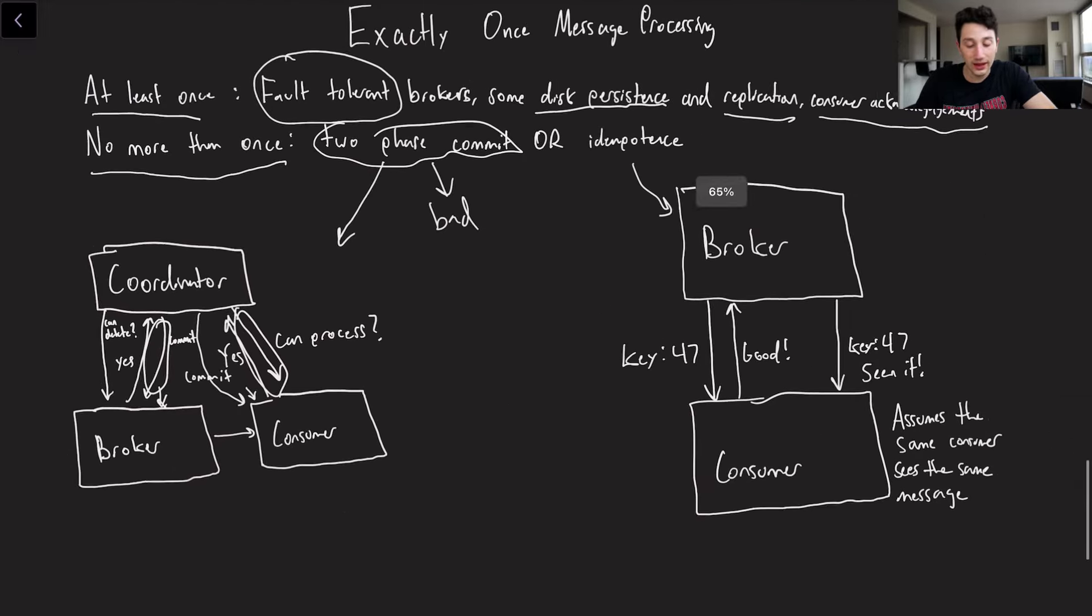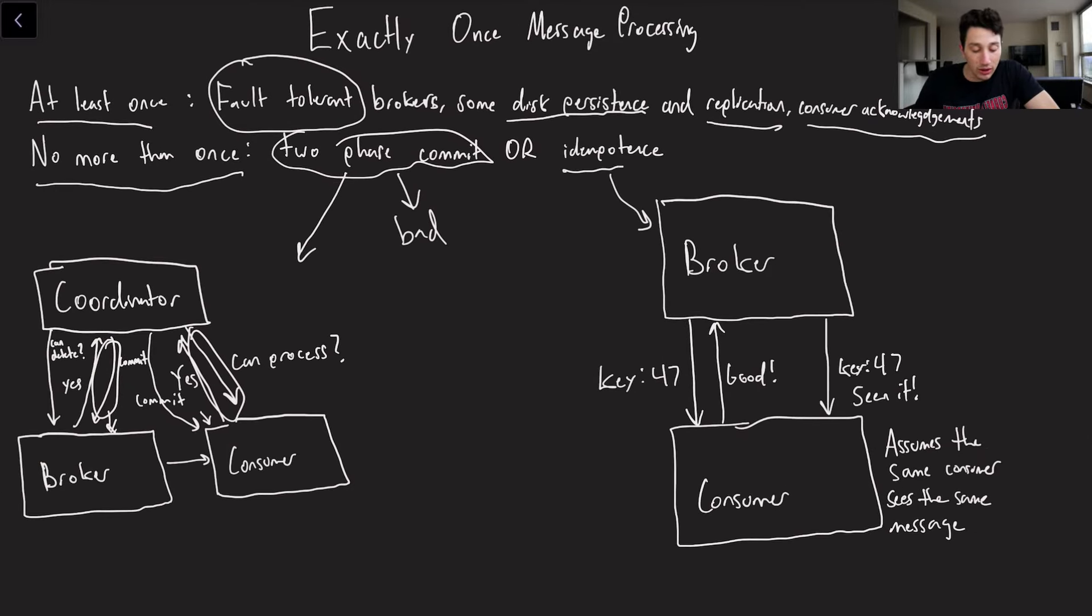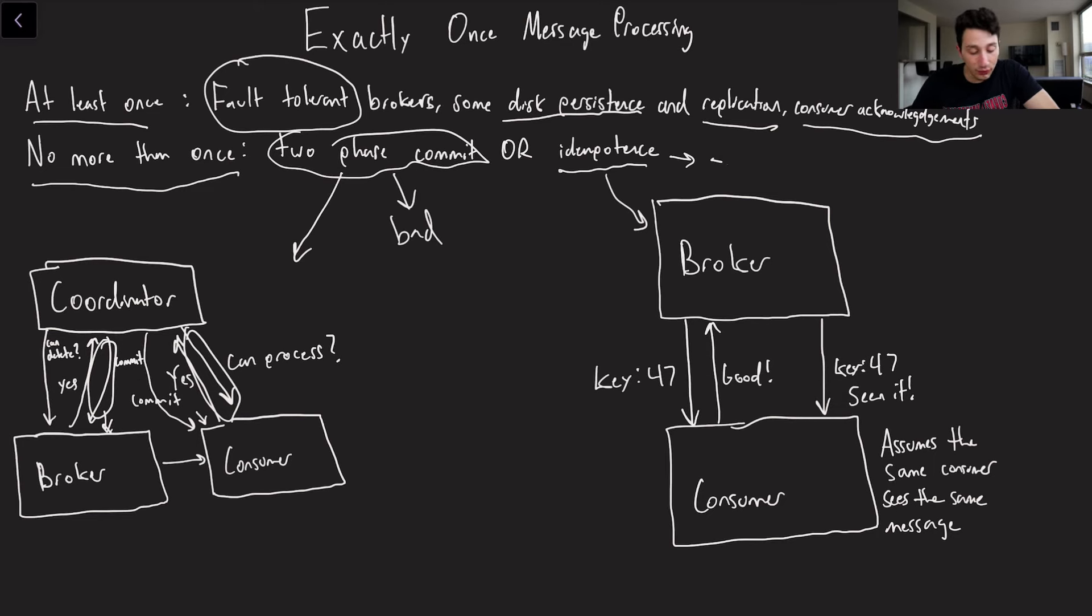which is why the other nice thing that we can possibly do is make our message broker item potent. Or not necessarily our message broker, but the combination of our message broker and our consumer. So what item potent means is if we were to process the message more than once, it's the same thing as processing once. There are no side effects to passing the message to the consumer multiple times. So what's an easy way of doing this? Well, basically every single message on the broker gets assigned a unique key. And when the consumer sees a message with said key, it can just respond saying whether or not it's seen the key before. And if that message comes back again, it'll see the key one more time and then respond accordingly saying, I've seen this. I'm not going to process it again.